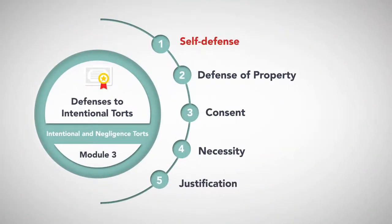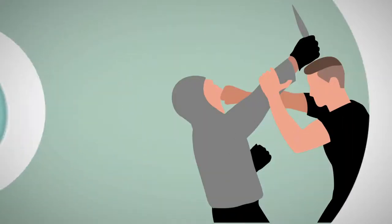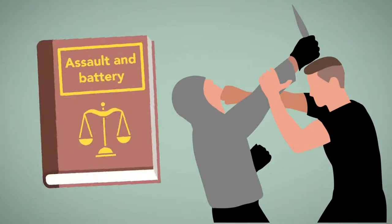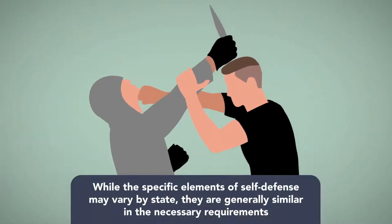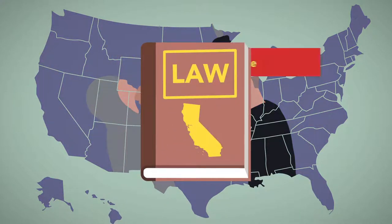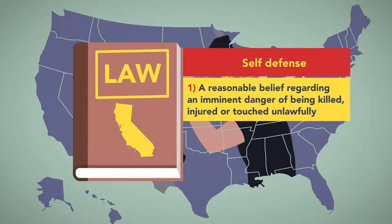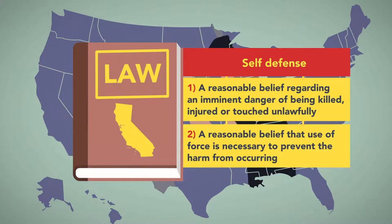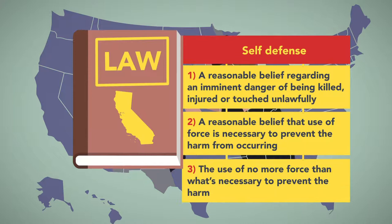Self-defense applies primarily to the torts of assault and battery. While the specific elements of self-defense may vary by state, they are generally similar in the necessary requirements. Under California law, self-defense is defined as: 1) a reasonable belief regarding an imminent danger of being killed, injured, or touched unlawfully; 2) a reasonable belief that use of force is necessary to prevent the harm from occurring; and 3) the use of no more force than what is necessary to prevent the harm.